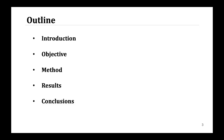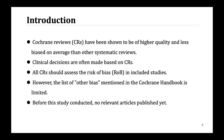I will present from the following five aspects. As we know, Cochrane Reviews have been shown to be of higher quality and less bias on average than other systematic reviews. When we make clinical decisions, we often use Cochrane Reviews. Cochrane Reviews should assess quality of included studies using the Risk of Bias tool. However, the list of Other Bias mentioned in the Cochrane Handbook is limited, and before this study was conducted, no relevant articles had been published yet.